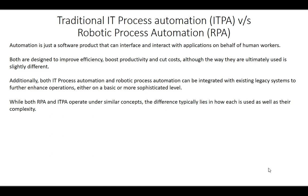Hi, I'm Nand Kishoswamy and today we're learning about the difference between IT process automation and robotic process automation. The similarity between traditional IT process automation and RPA is that both are software products that can interface and interact with applications on behalf of human workers. Both are designed to improve efficiency, boost productivity, and cut costs.